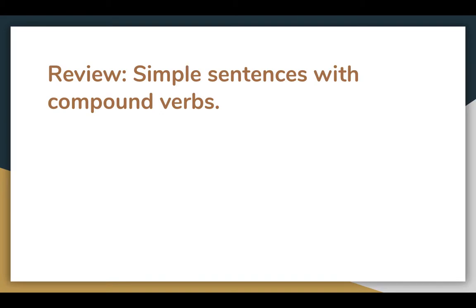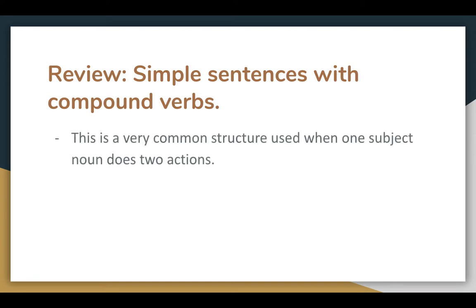This is a little bit of a review because you can actually find this sentence structure on your worksheet — the one called Sentences Reviewed and Redeployed — which has a list of all the formulas and examples. This is a very common structure, and we use it in particular when there's one subject that is the main focus of the sentence, and that subject is doing two different verbs. You're usually going to use the linking word AND in the middle. Let's take a look at the formula.